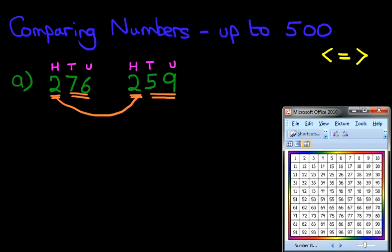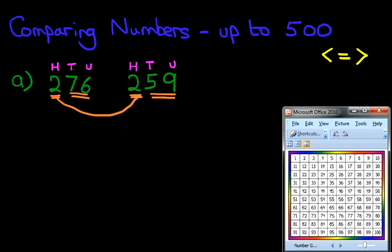And that's right, it is 59. So now we know which symbol we have to put here. It's 59, so that arrow points to the smaller number. Here it is. It points to the smaller number. So if we read this, it becomes 276 is greater than 259. And it really is as simple as that.